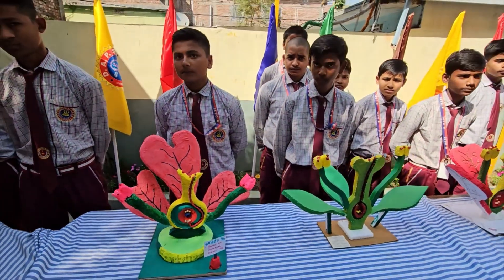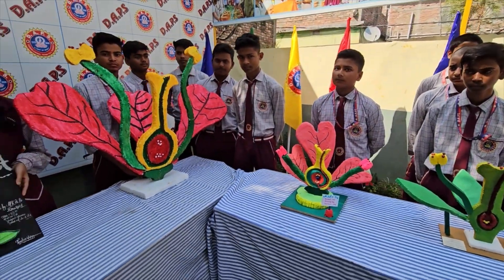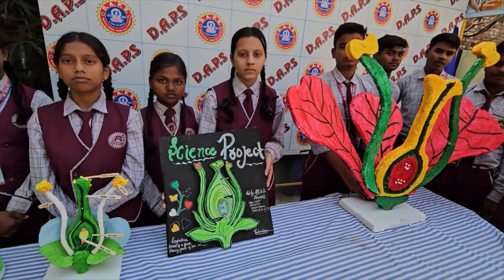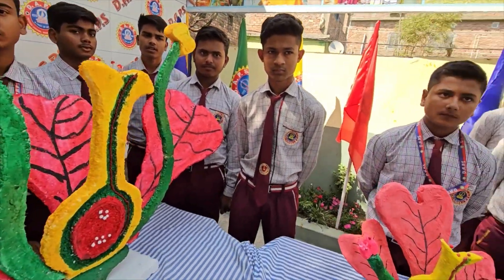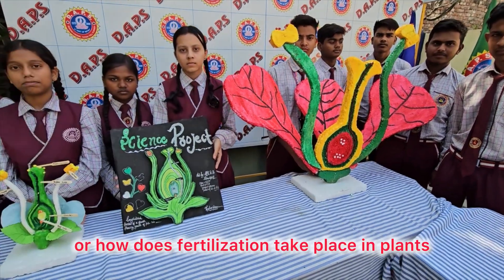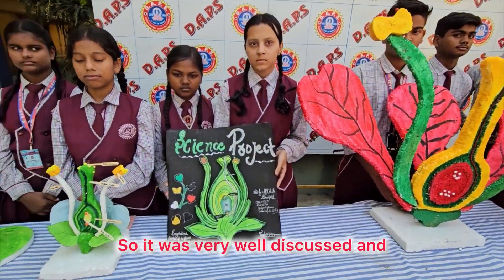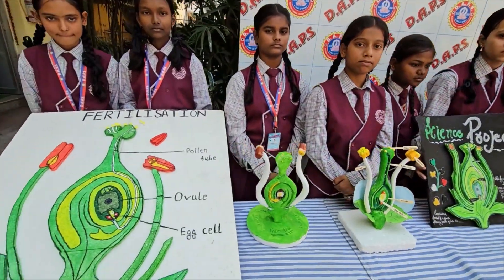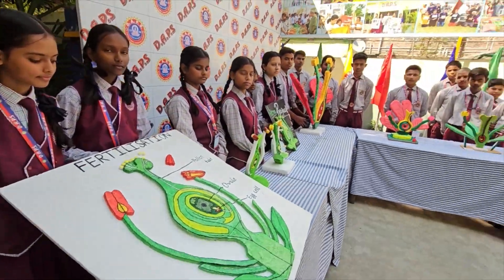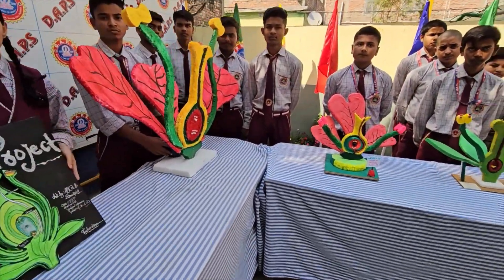Thanks a lot, dear students. These were the students of class 7 who had prepared a project on the topic of pollination and fertilization — how fertilization takes place in plants. It was very well discussed and done by the class 7 students. Thanks a lot.